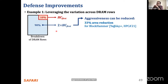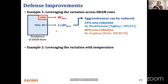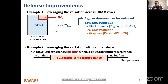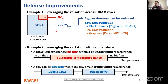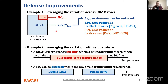Another defense example leverages the vulnerable temperature range: you can keep measuring the temperature of your DRAM chip using sensors, and once a DRAM row enters its vulnerable temperature range, you can disable it, retire it, move its data to another row, or continue using it with additional precautions.